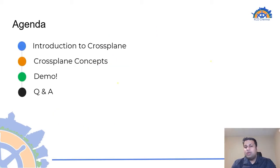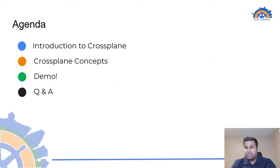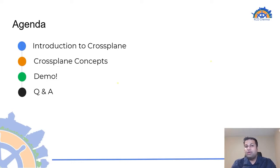Let's take a look at the agenda of this talk. We will start with an introduction to Crossplane and see how it differs from other popular infrastructure provisioning tools such as Terraform and Pulumi. We will go over the installation steps, followed by an overview of the fundamental Crossplane concepts such as providers, packages, managed resources, and composite resources. This will be followed by a quick hands-on demo where we'll make use of Crossplane to deploy resources on the AWS cloud, and we'll wrap up with a round of Q&A.